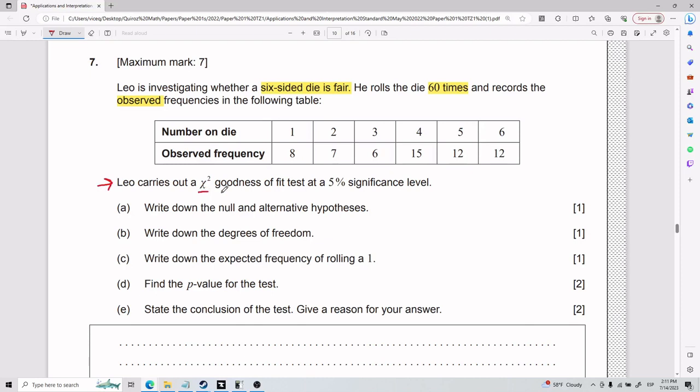We have that Leo carries out a chi-squared goodness of fit test at a 5% significance level. For part A, we need to write down the null and alternative hypothesis. But what it will revolve around is what your guy is trying to investigate.